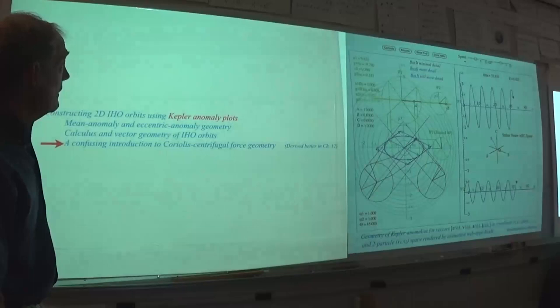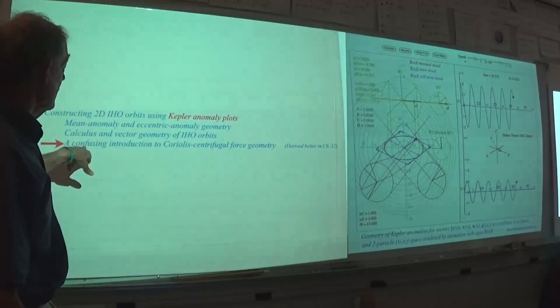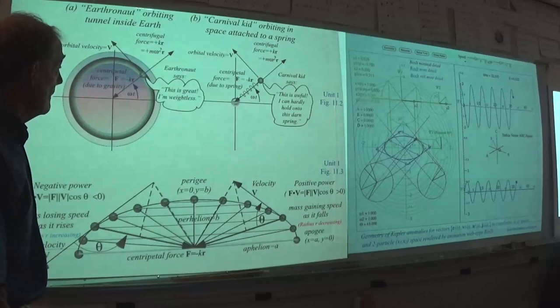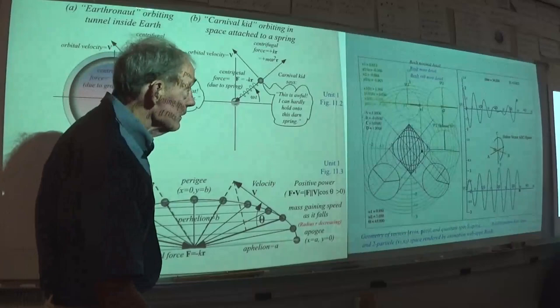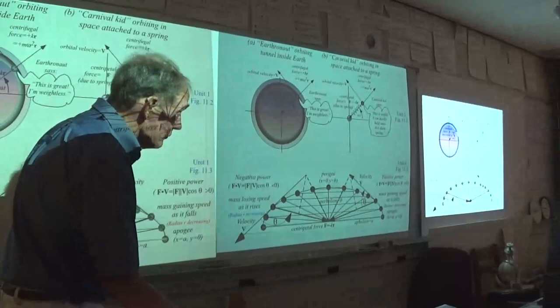We've got more to cover here shortly. I want to look at the Coriolis and centrifugal stuff. This is compared to what we'll do later in Chapter 12, coming up in the next couple of lectures — there we make Coriolis a little less confusing.